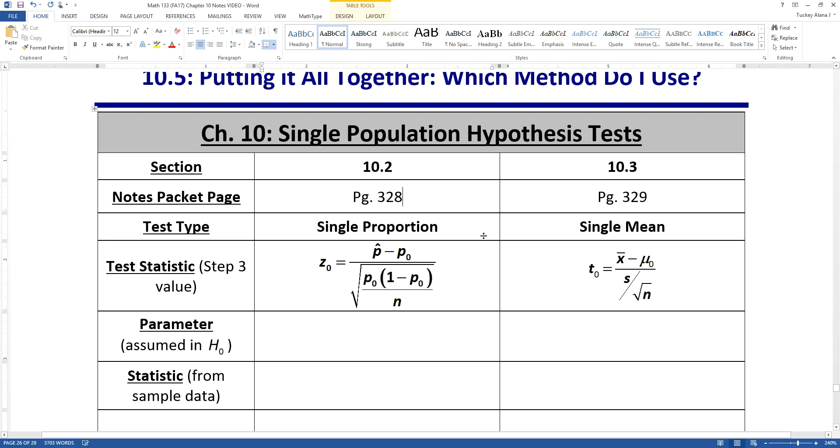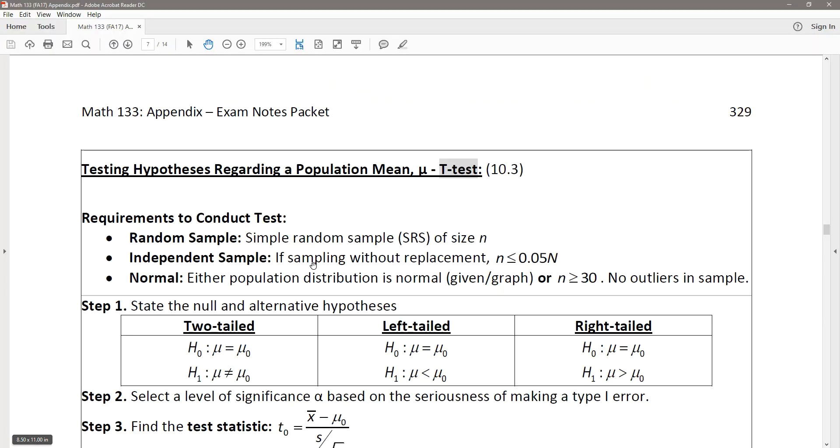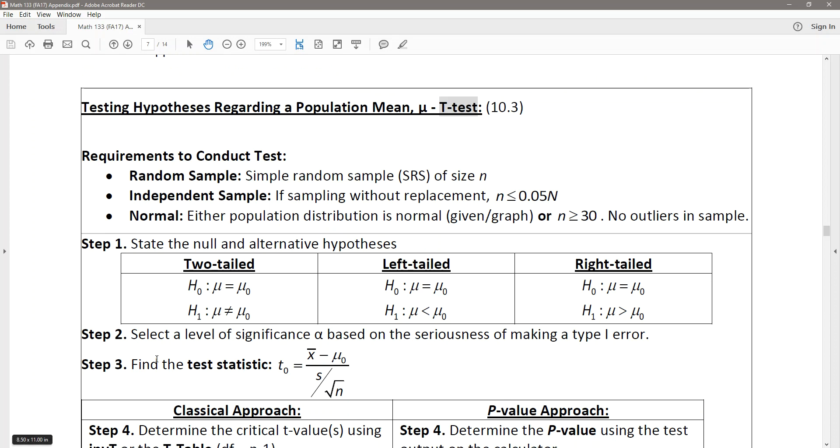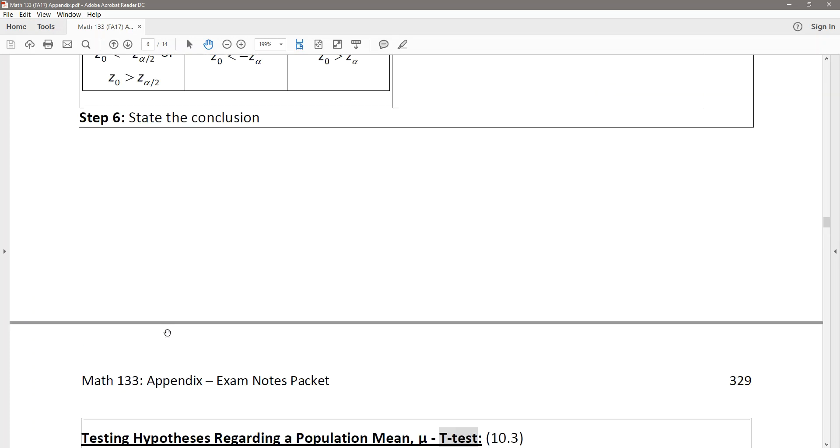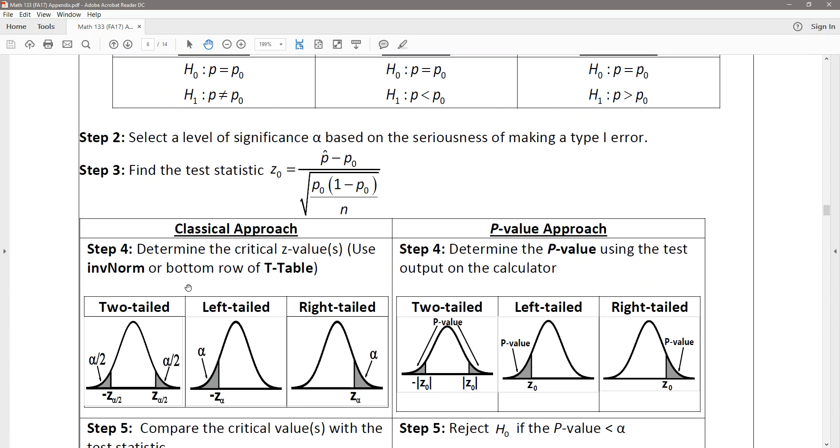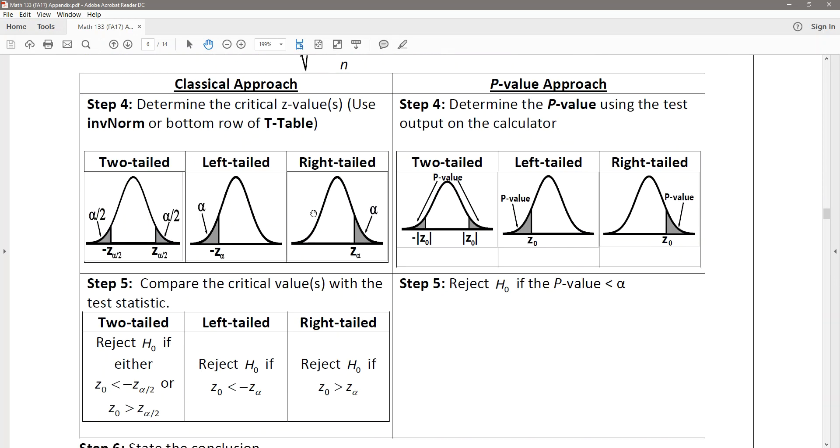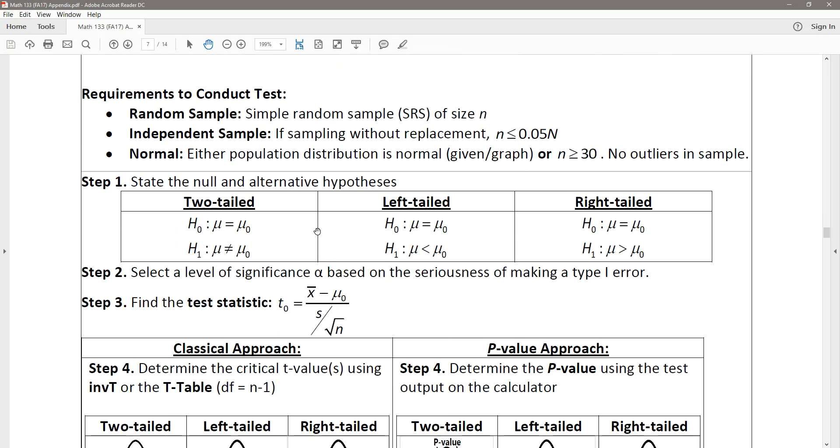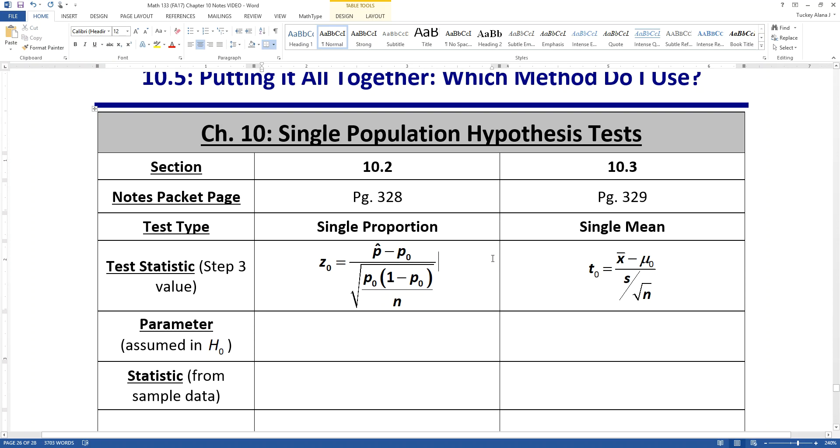The single proportion test has a step 3 value in the hypothesis testing method. The test statistic of T0 or Z0. For proportions, it's Z0, which is this formula right here. And then for means, it's T0, which is this formula right here. I just typed those right into your table for you.